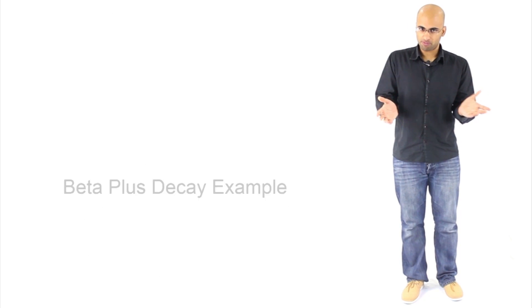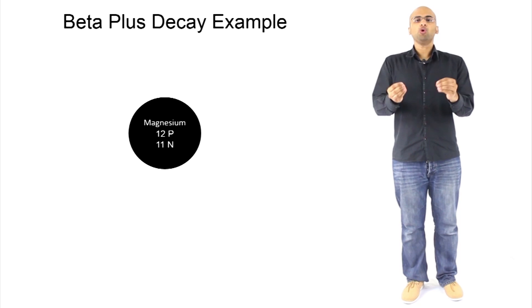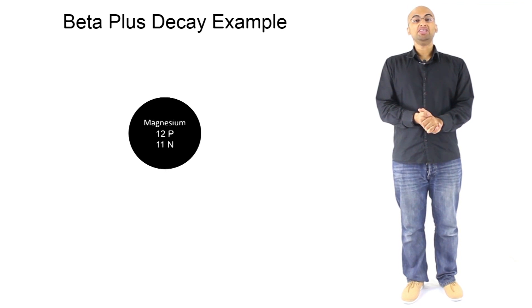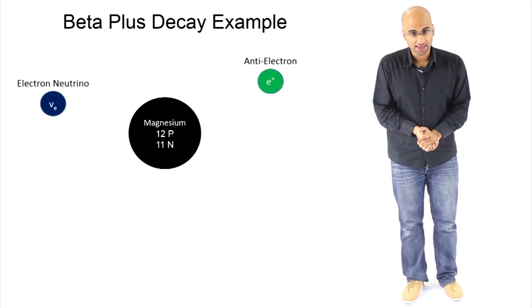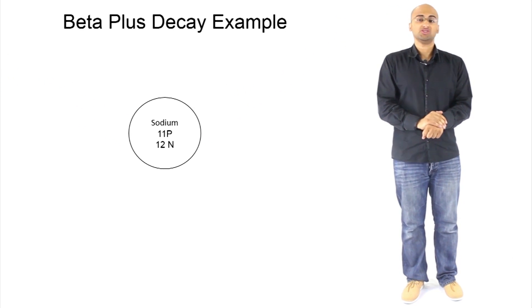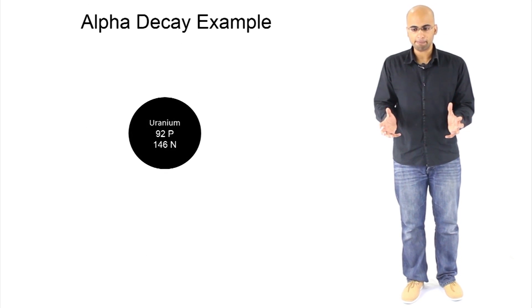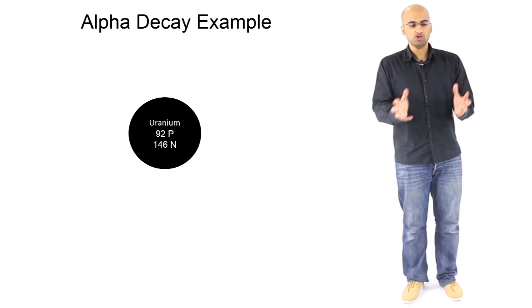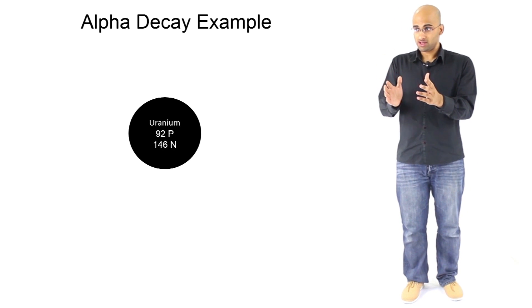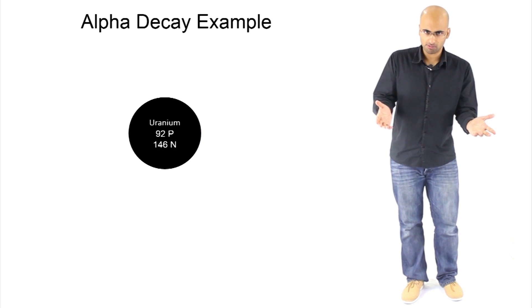There is another type of beta decay called beta plus decay, which is when one of the protons becomes a neutron by emitting an anti-electron. So far we have two radioactive processes. There is another one called alpha decay. Alpha decay basically means that the nucleus of an atom emits, it gets rid of, two protons and two neutrons. It's called an alpha particle.